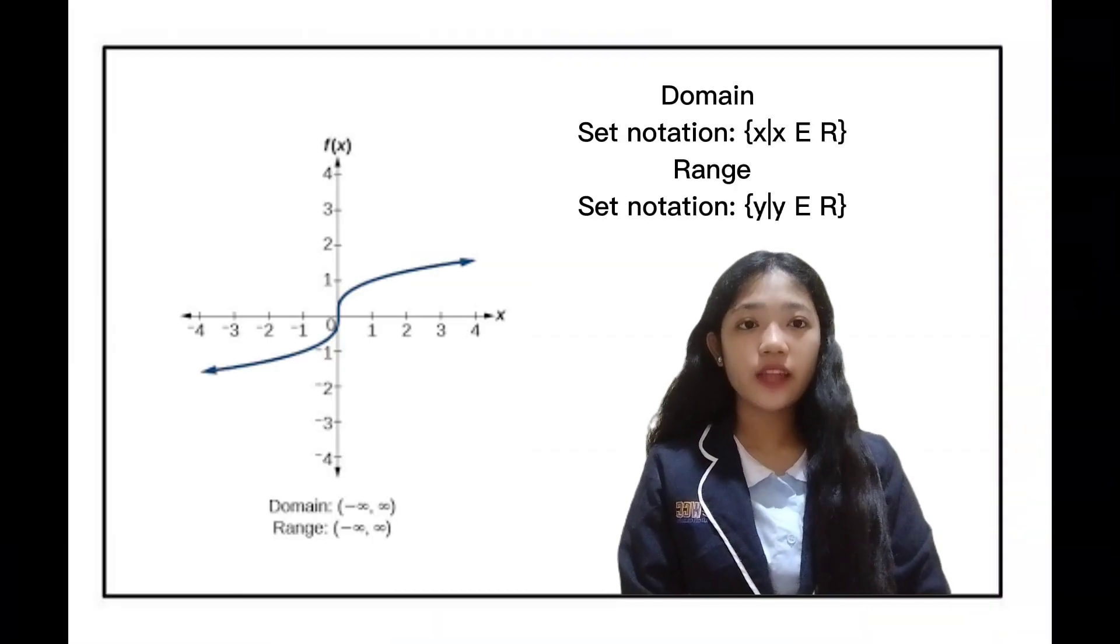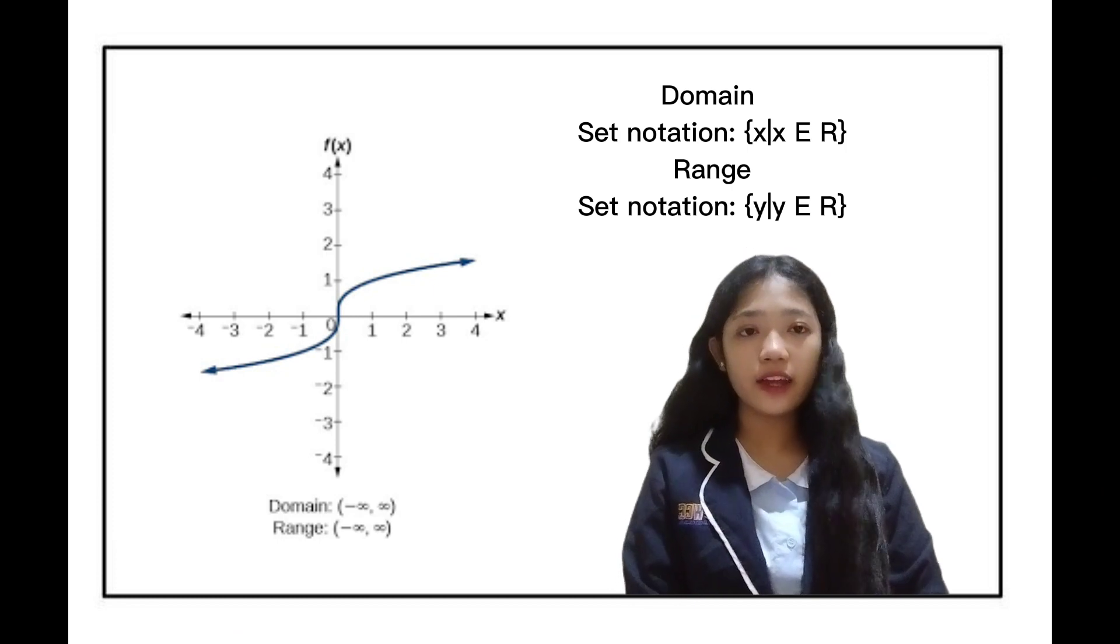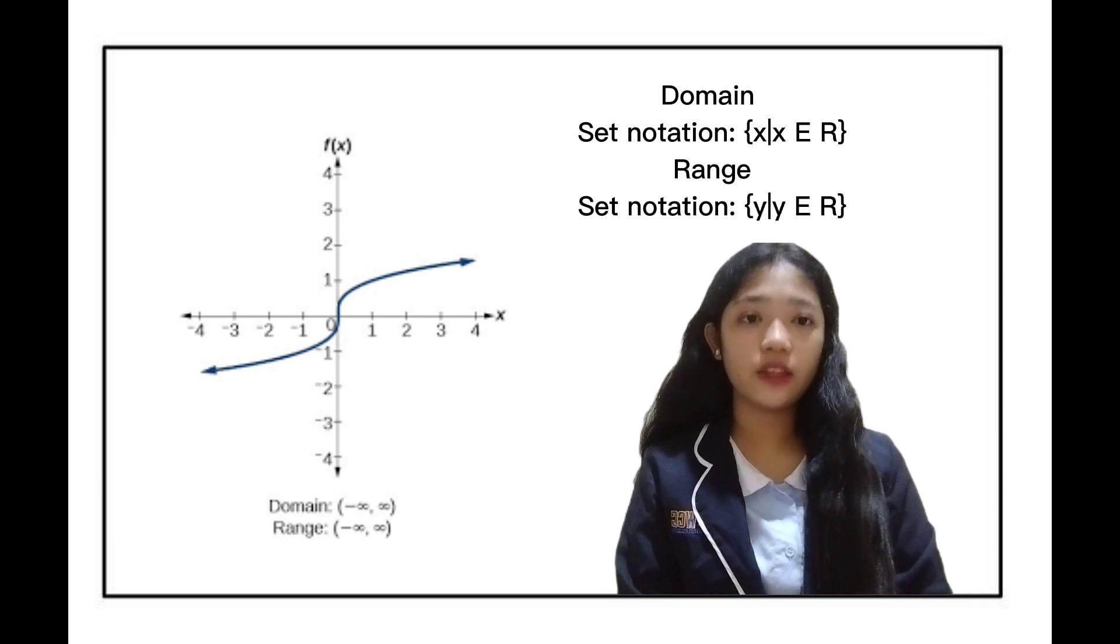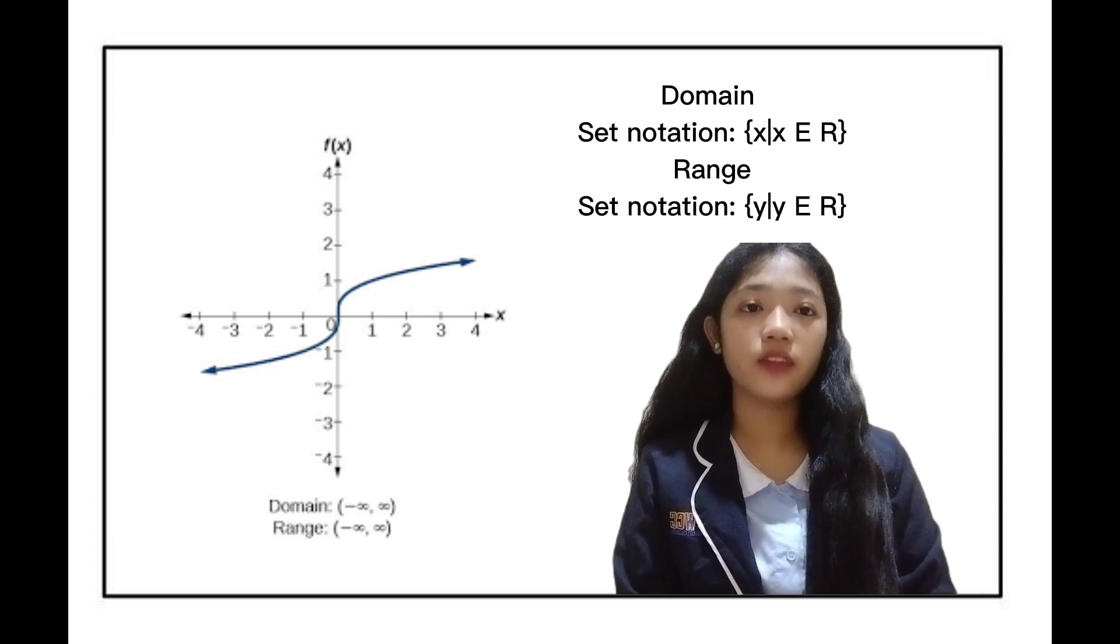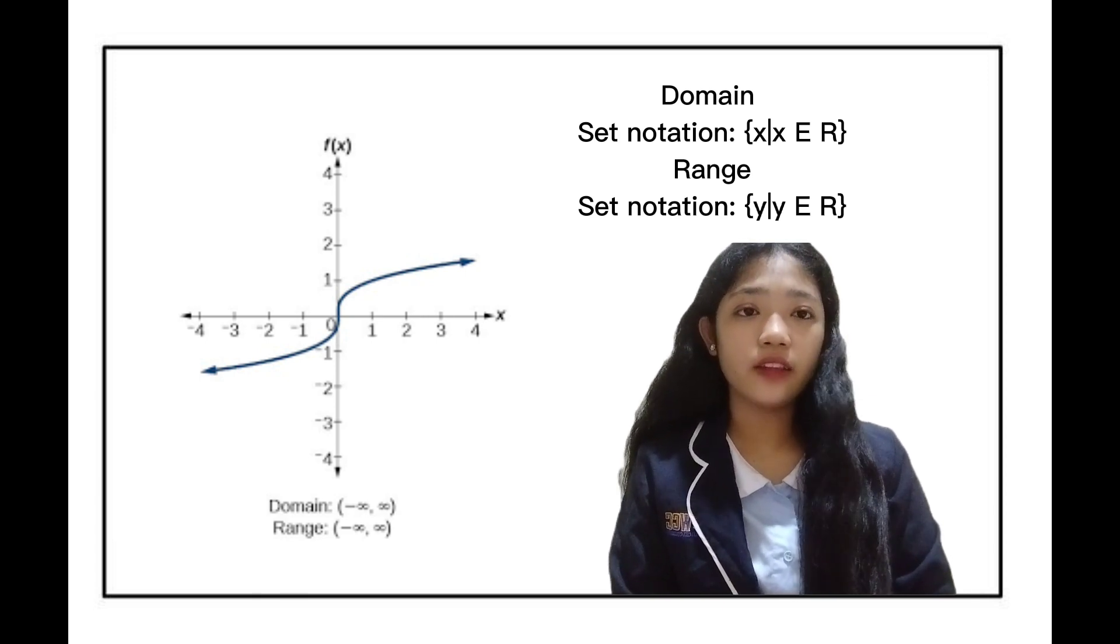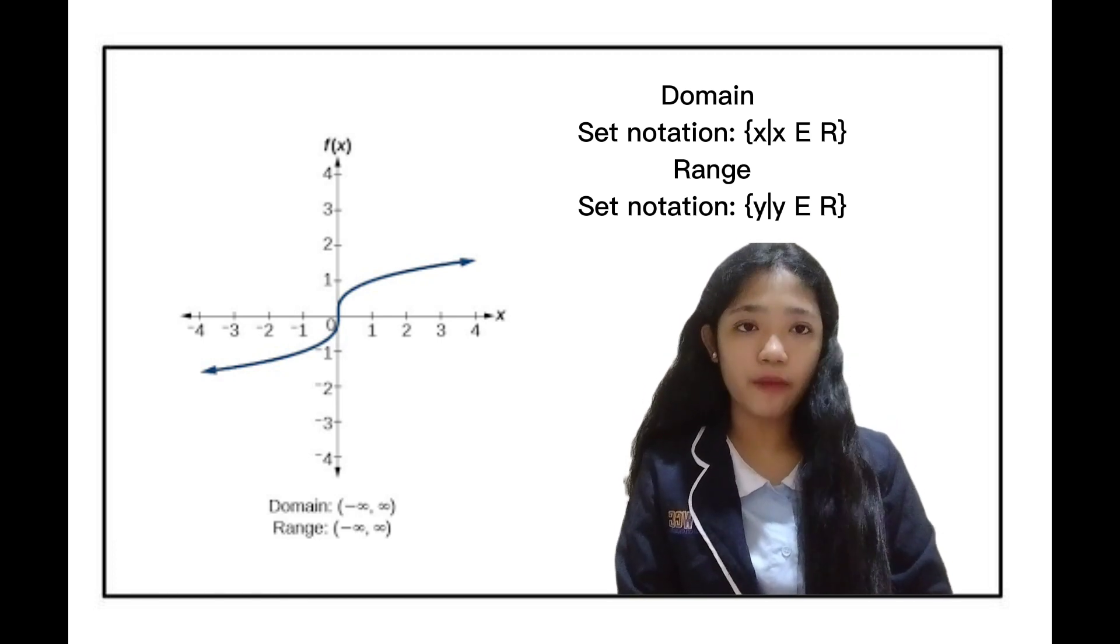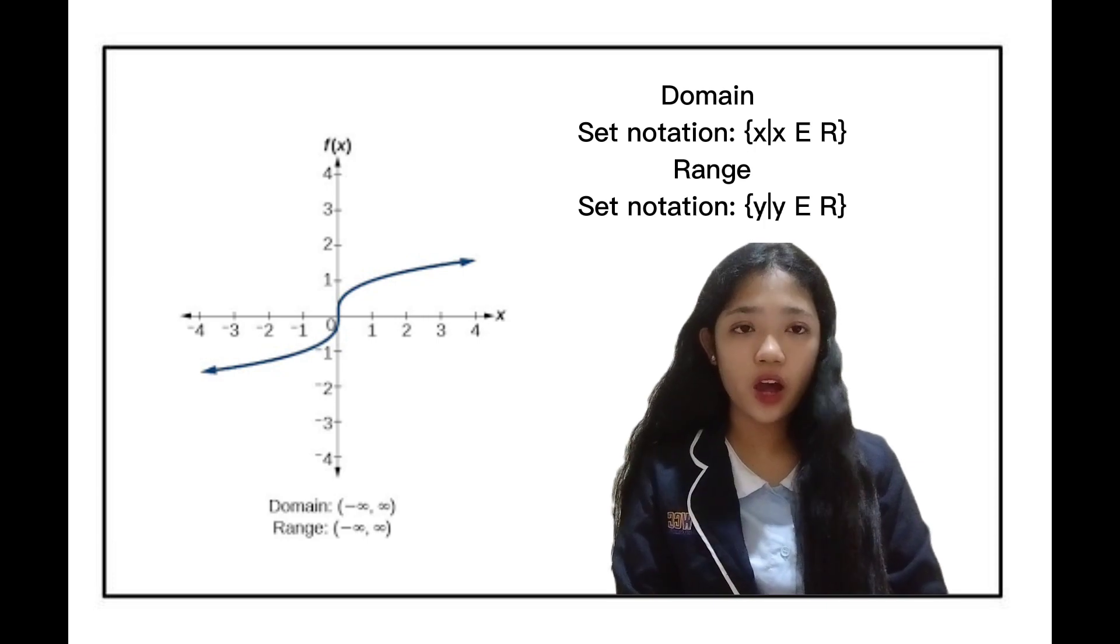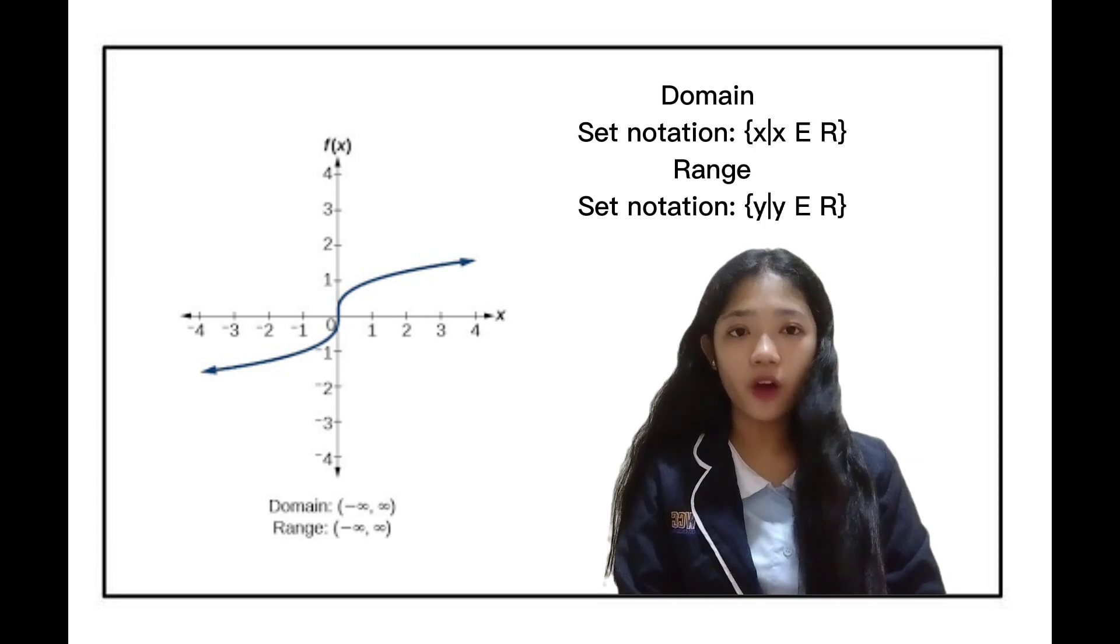Our domain is negative infinity to infinity, same as the range. But our set notation for domain is: x such that x is an element of all real numbers. While range is: y such that y is an element of all real numbers. Thank you for listening. I hope you learned a lot from me. Goodbye!